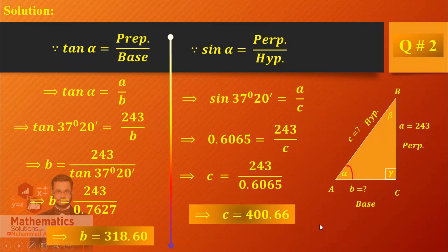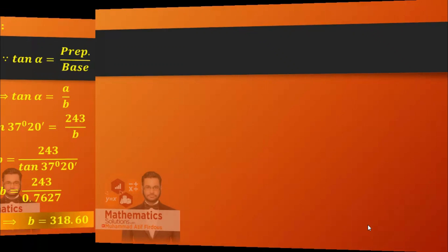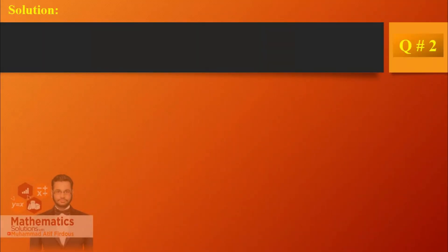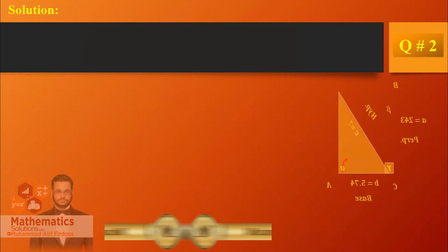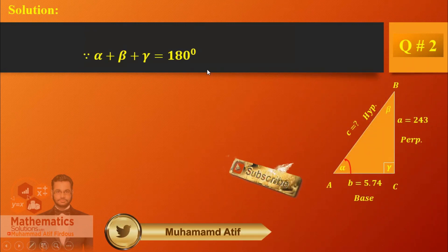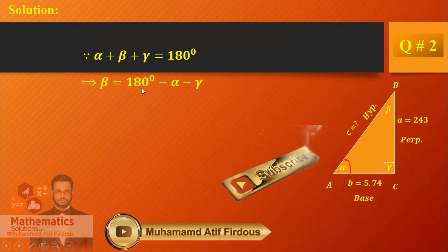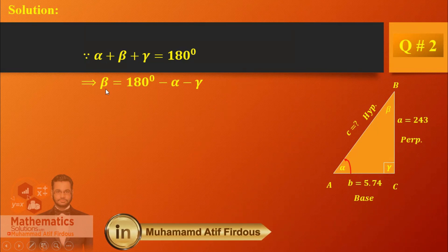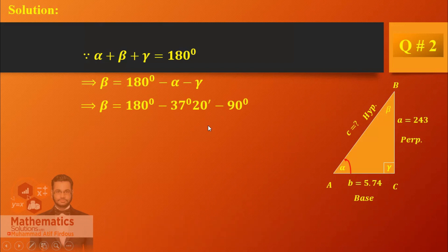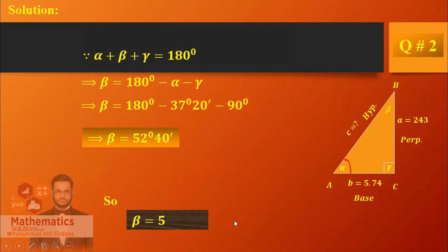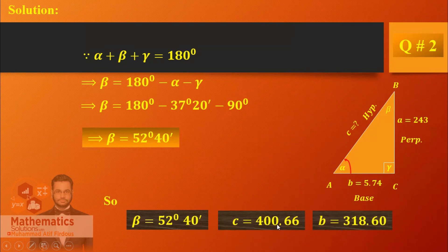Two sides have been found. Now for the angle: two angles are already given — gamma and alpha. Using the rule that alpha plus beta plus gamma equals 180 degrees, we solve for beta. The answer is beta equals 52 degrees and 40 minutes. For a correct presentation, write beta, C, and B in boxes with commas so the checker can easily follow.